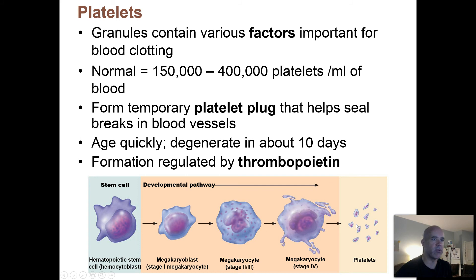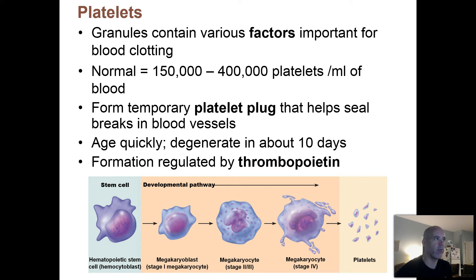Platelets are released into the bloodstream and circulate around with your red blood cells and white blood cells. They contain granules on the inside, so when you see them under the microscope they look spotty like granulocytes, but those granules contain a number of different factors that are important for blood clotting. You have a lot of these — about 150,000 to 400,000 per milliliter of blood.